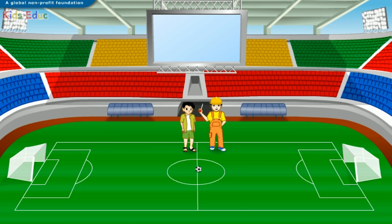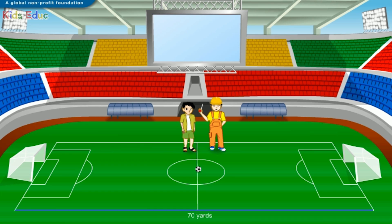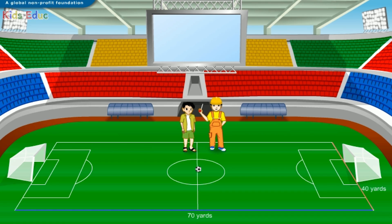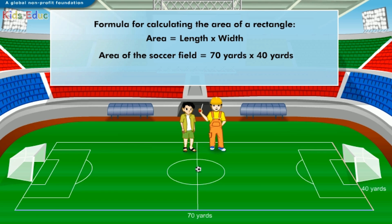Now, let's measure the area of the soccer field. I will share my ruler with you for this. Let's measure the length of one side of the field. As you can see, its length is 70 yards. Let's now measure the width of the field — this is 40 yards. Based on the formula, the area of the soccer field is 70 yards multiplied by 40 yards, which is equal to 2800 square yards.